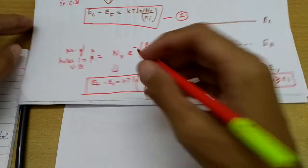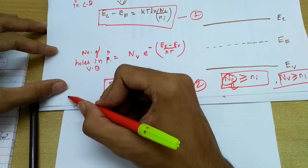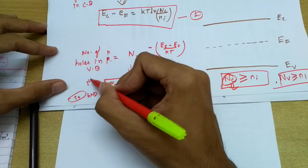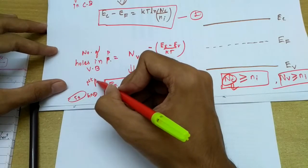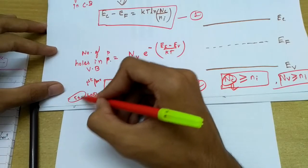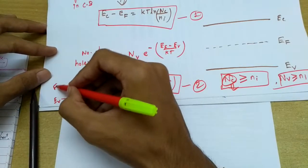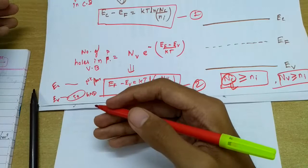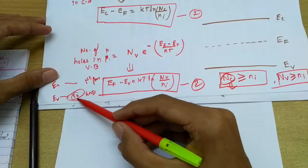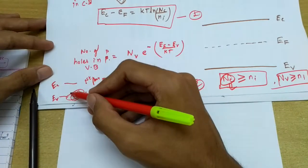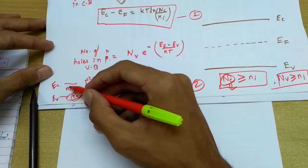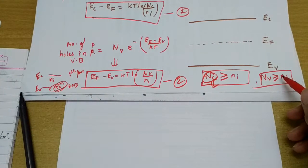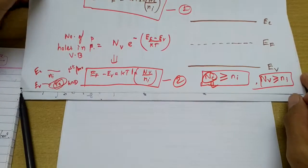For example, suppose there are 50 people on the ground floor (our Ev) and they need to go to the first floor (our Ec). Either all 50 will go, or fewer than 50 — so either the whole nv will go or less than nv. Whatever number goes above is our ni, so nv is always greater than or equal to ni.